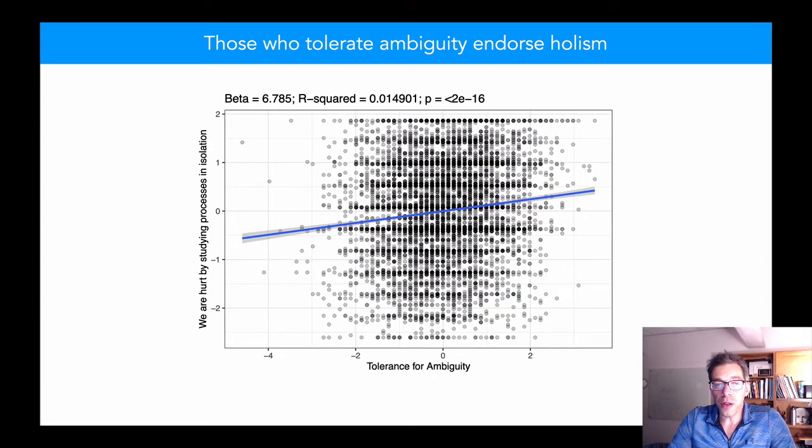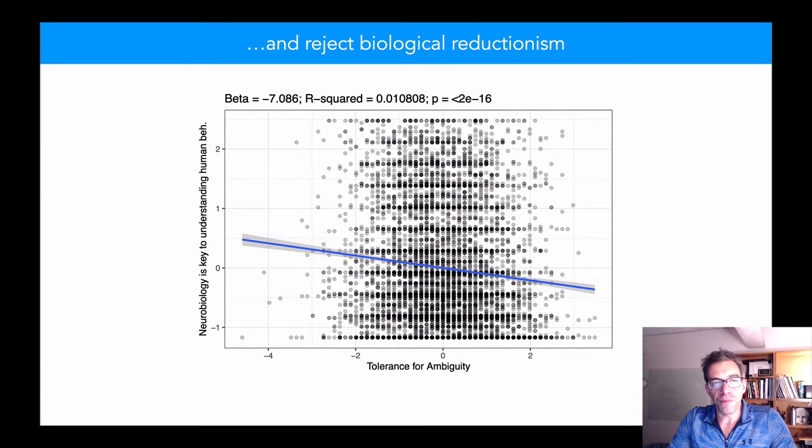Those who tolerate ambiguity tend to endorse studying systems as a whole rather than focusing on individual processes. And they tend to reject biological reductionism.